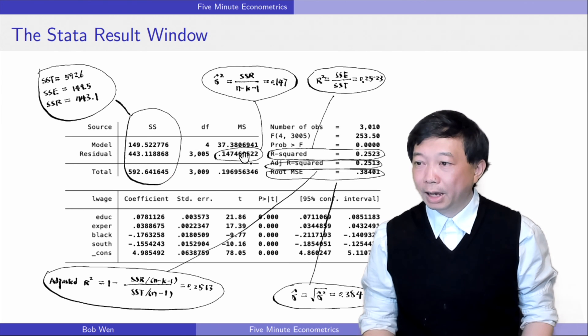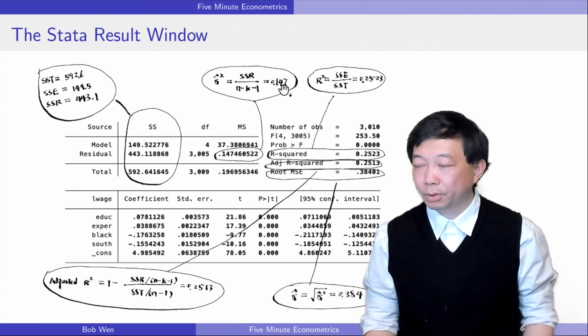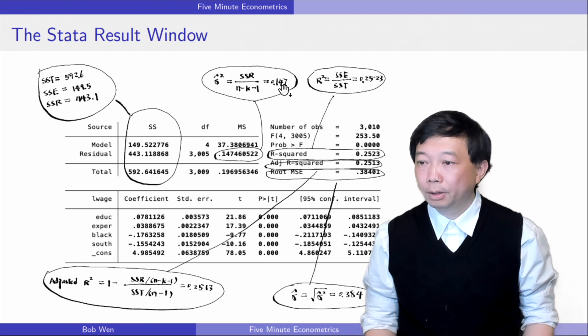The unbiased estimator of the error variance sigma squared hat equals the residual sum of squares SSR divided by its degrees of freedom n minus k minus 1. n is the number of observations and k is the number of explanatory variables. Sigma squared hat equals 0.147.